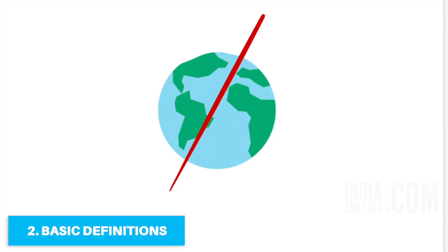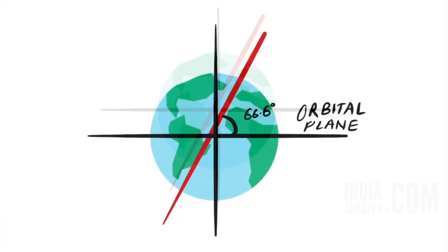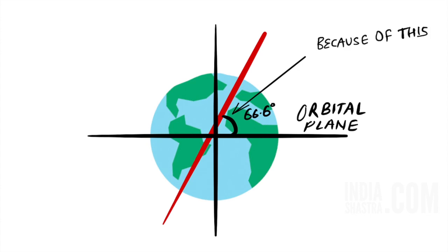Axis is an imaginary line. We studied about it in the second chapter. It makes an angle of 66.5 degrees with its orbital plane. Because of this tilt, we have seasons on Earth.